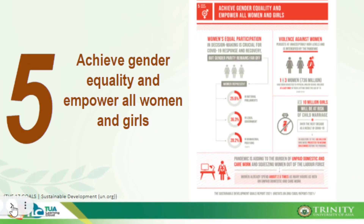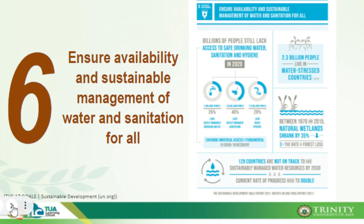SDG number five is 'Gender Equality' — to achieve gender equality and empower all women and girls. SDG number six is 'Clean Water and Sanitation' — to ensure availability and sustainable management of water and sanitation for all. Water potability has always been a problem globally; even by 2022, potable water remains a major challenge.